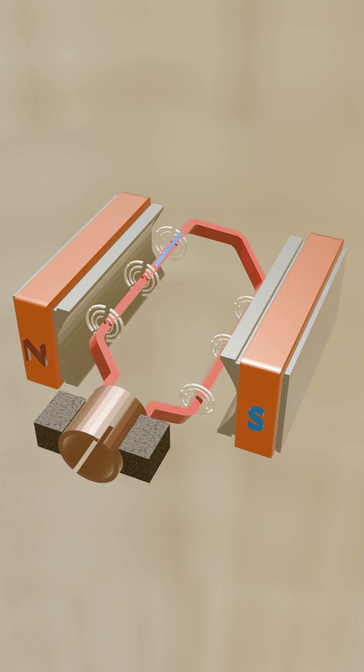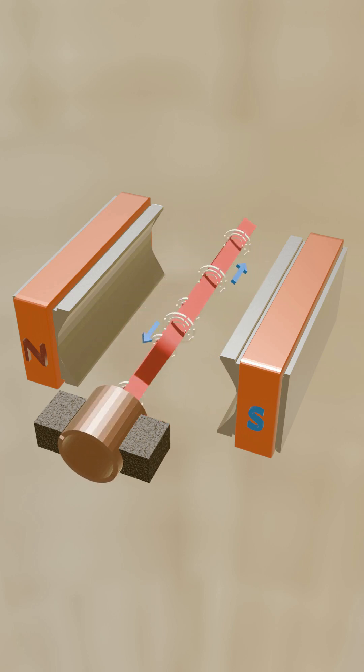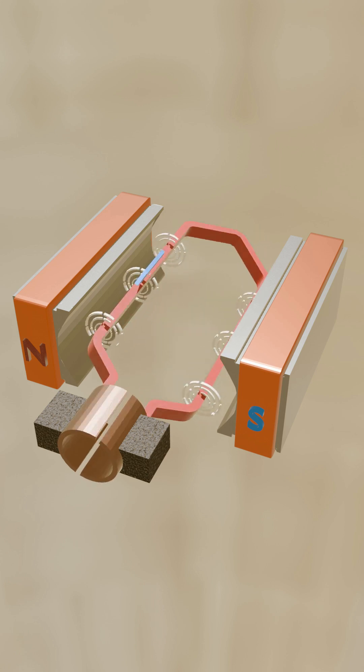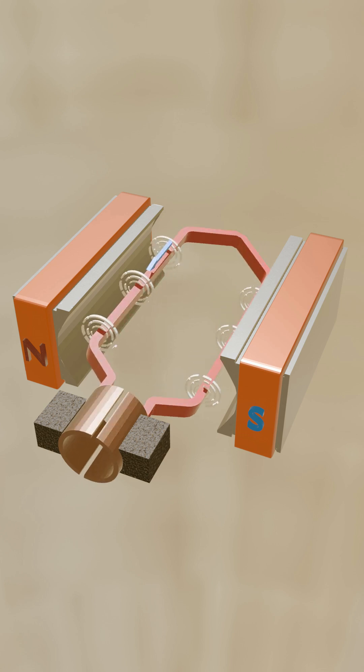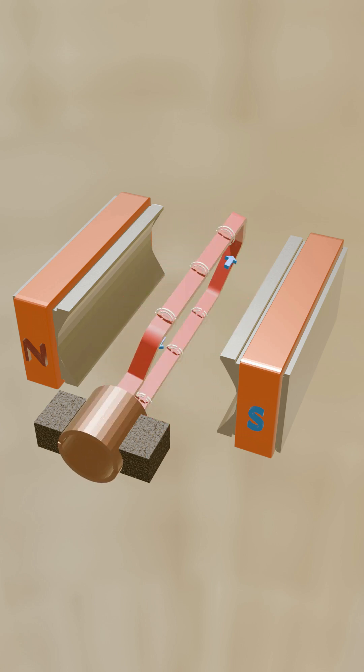Commutation is the act of reversing the current flow in an armature coil at the correct time. It's necessary to continue having rotational force on the armature coil as it rotates in the magnetic flux provided by the main field.